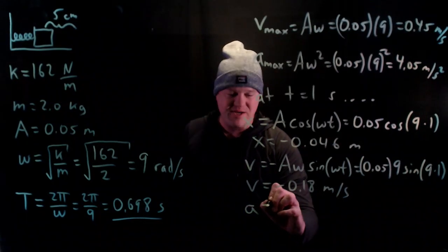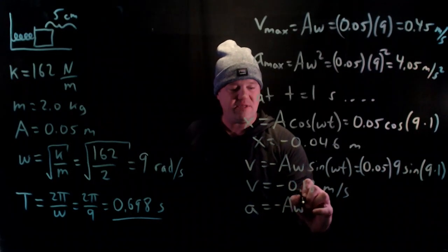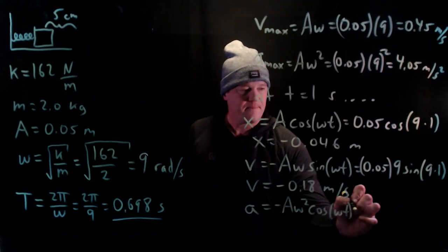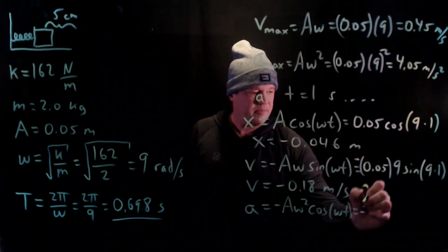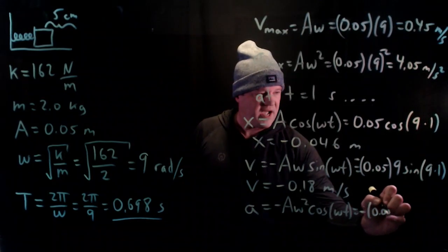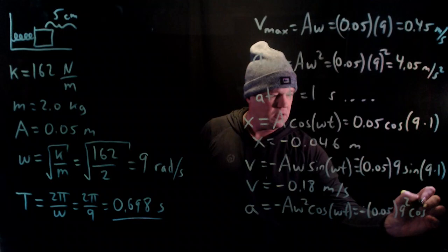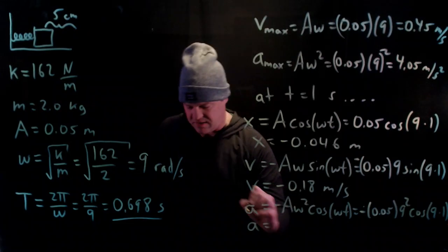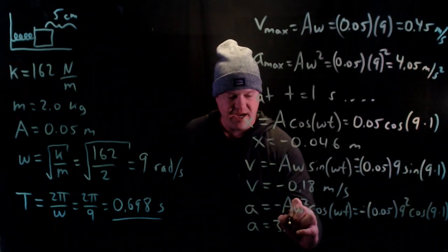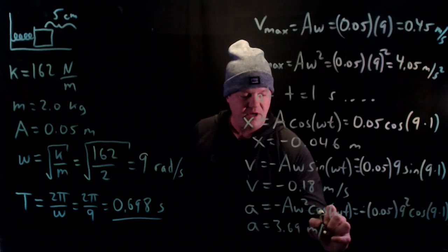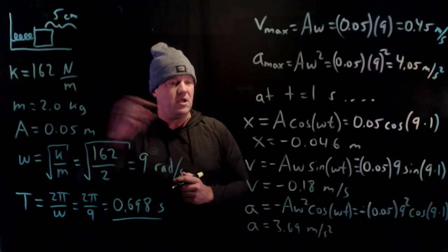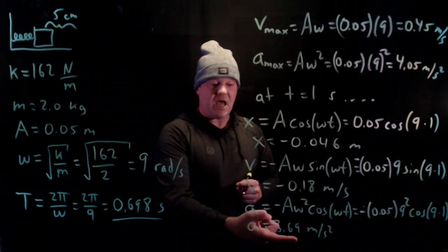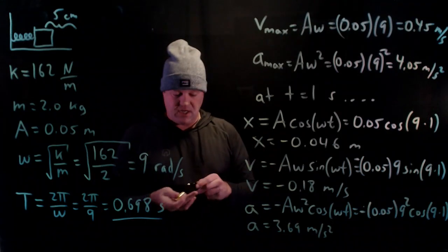We can do a similar thing with acceleration: a = -Aω² cos(ωt). Throw in the numbers: -0.05 × 9² × cos(9 × 1) = +3.69 meters per second squared. That makes sense. Its position is negative, so it's to the left of the origin. The spring is compressed at that moment, so we're going to have a positive acceleration. It's getting pushed to the right.